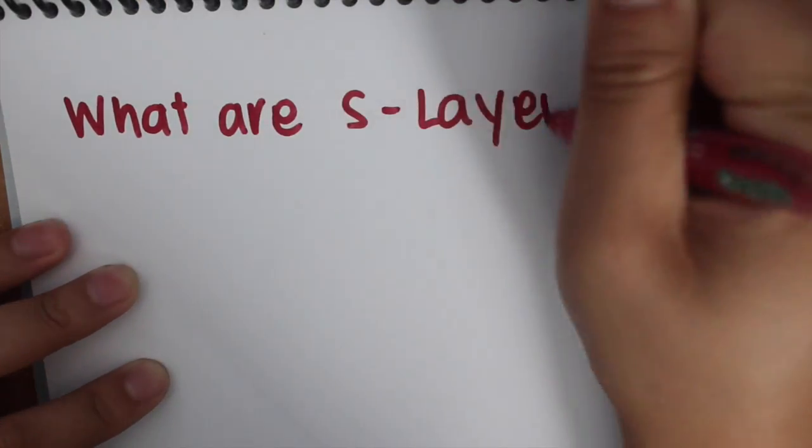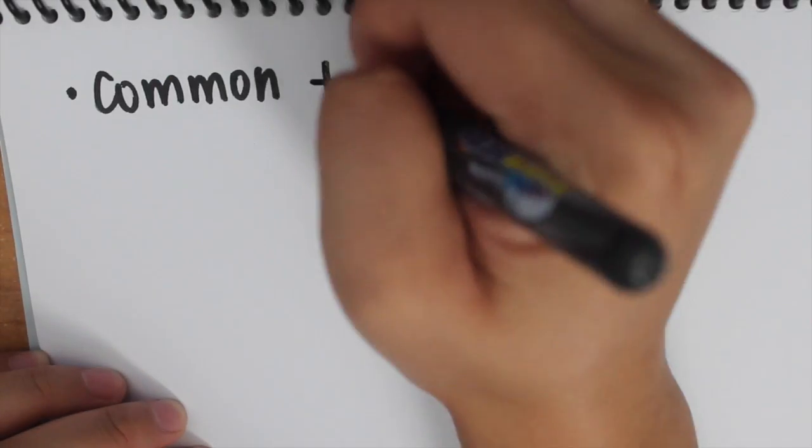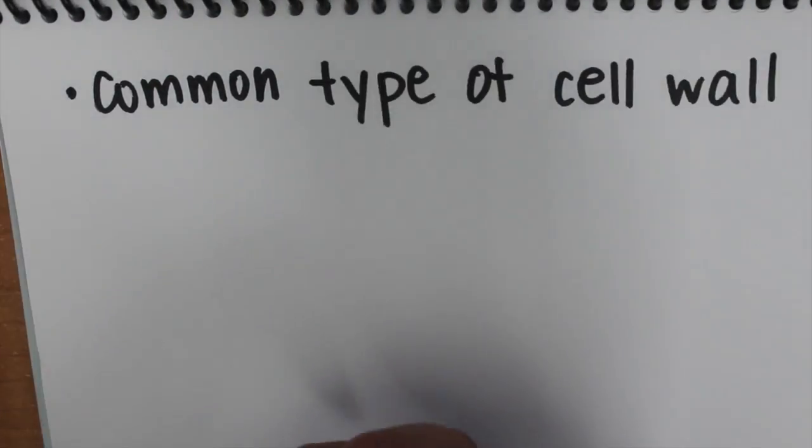What are S layers? Also known as surface layer, they are a common type of cell wall.